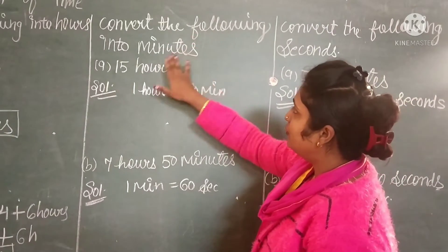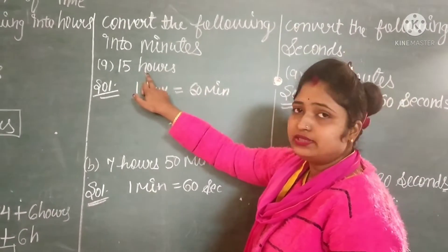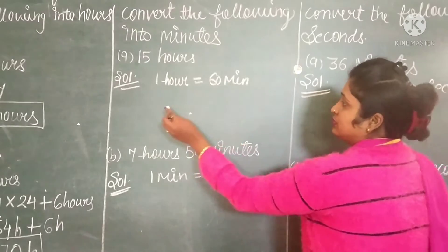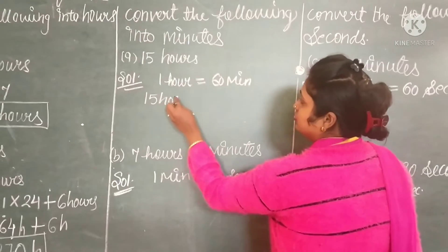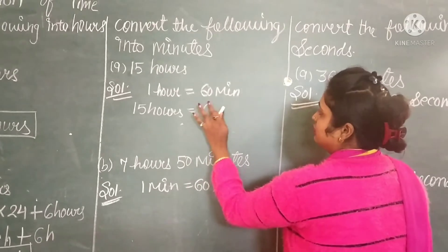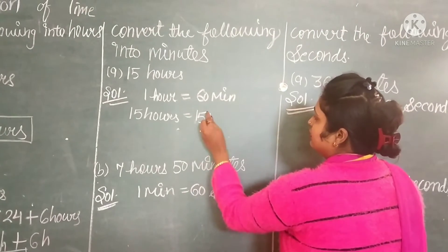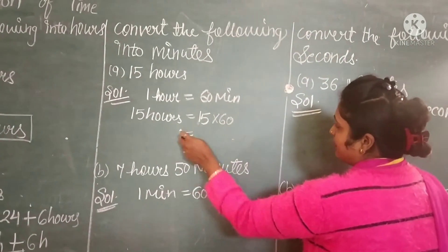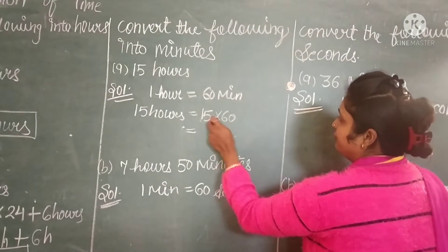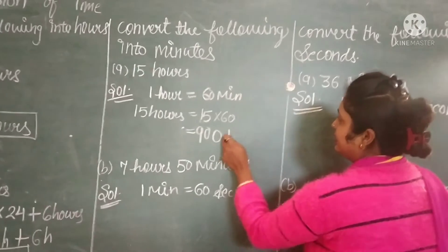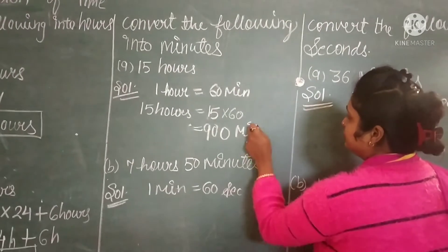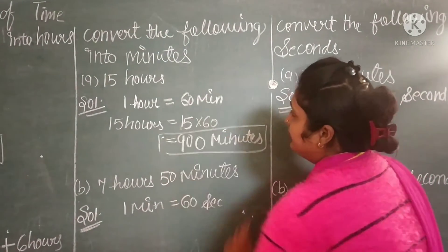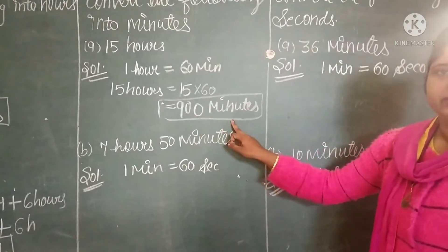Next question: convert the following into minutes. We have 15 hours. We know that 1 hour equals to 60 minutes. So, 15 hours equals to 15 multiplied by 60, which gives us 900 minutes. So in 15 hours, there are 900 minutes.